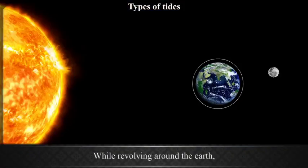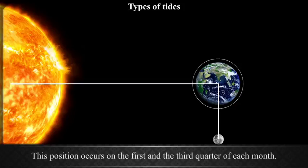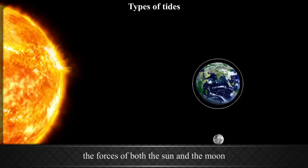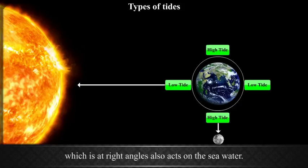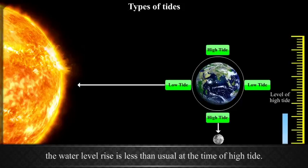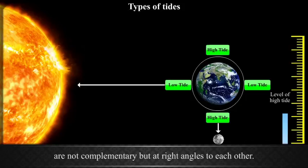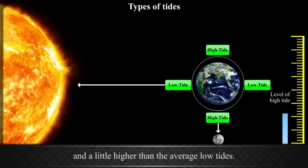Neap Tide. While revolving around the Earth, the Moon makes a right angle with respect to the Earth and the Sun twice a month. This position occurs on the 1st and the 3rd quarter of each month. On both these days, the forces of both the Sun and the Moon operate at right angles on the Earth. At the places where the Sun causes high tide, the gravitational pull of the Moon, which is at right angles, also acts on the seawater. Due to such conditions, the water level rise is less than usual at the time of high tide, and the fall in water level is less than usual at the time of low tide. This is because the attraction of the Sun and the Moon are not complementary but at right angles to each other. Such tides are called neap tides. Neap tides are a little lower than the average high tides and a little higher than the average low tides.